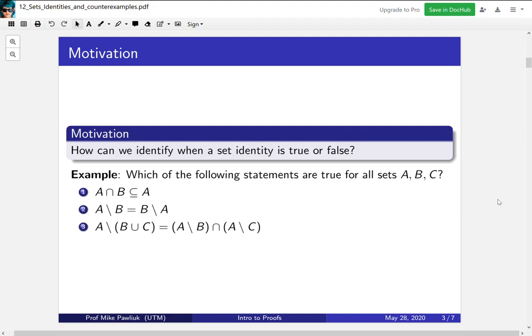Our motivation for this section is how do we know when a set identity is true or false and how can we figure that out? Here's a list of three random examples of potential set identities. These are all asserting that certain sets are related in some ways. Which of these three are true and which are false? We're going to see a technique for proving the true ones, but we also want to be able to identify ones that are false right away.